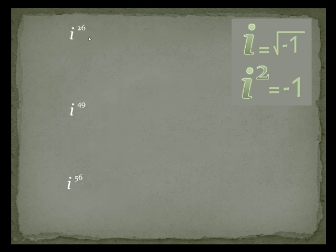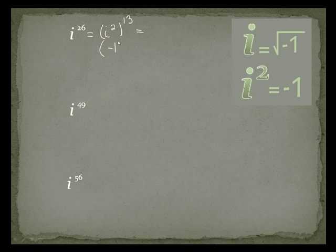Let's try i to the 26. That would be i squared to the thirteenth power, because 2 times 13 is 26. i squared is negative 1, so this is negative 1 to the thirteenth power. A negative 1 raised to an odd power is always going to be negative, so my answer is negative 1.